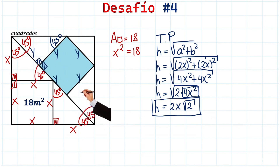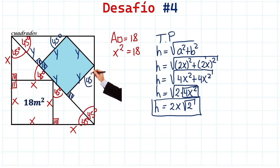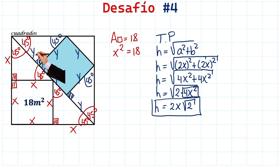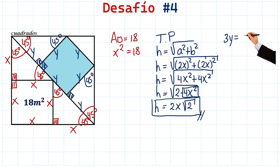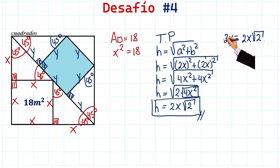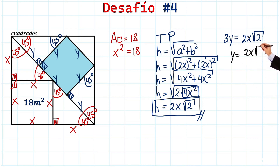The same happens on the other side: 90 degrees here, 45 degrees here, so this side is also y. Adding y plus y plus y gives us the diagonal we already found. So we can say 3y equals 2x times the square root of 2, which means y equals (2x√2) divided by 3.